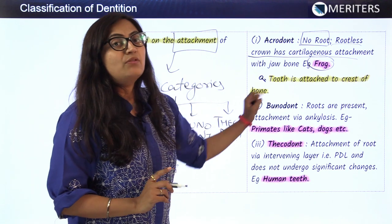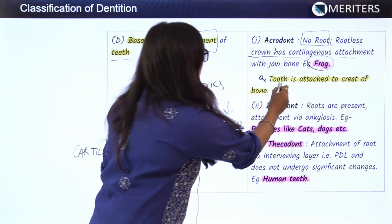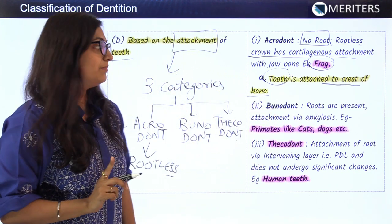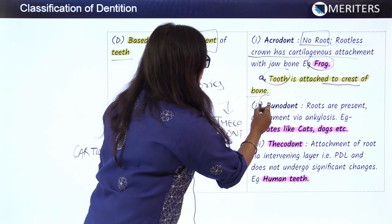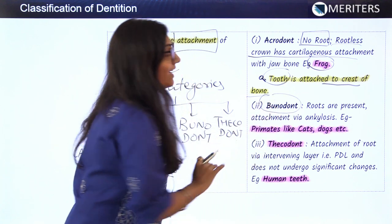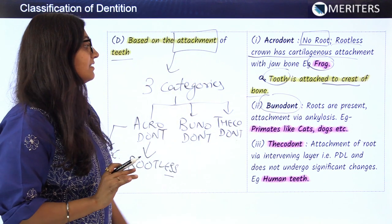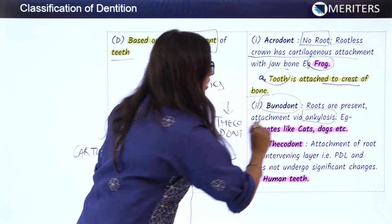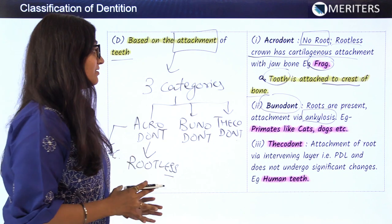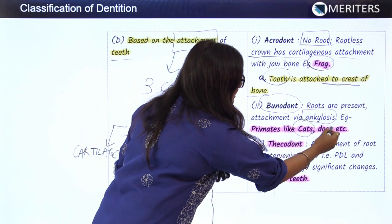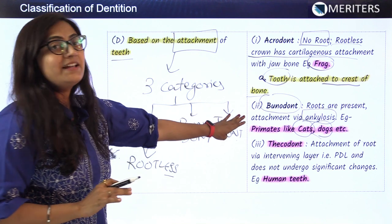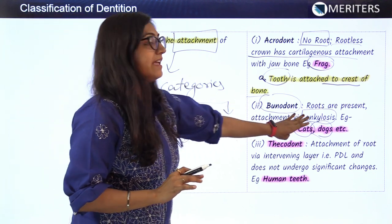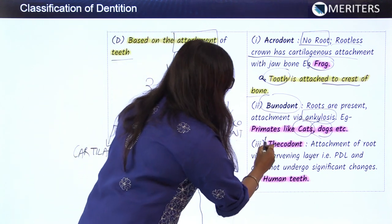The second type is bunodont. Bunodont teeth have roots present, but the mode of attachment is via ankylosis — they are completely ankylosed. Examples include cats, dogs, and primates.